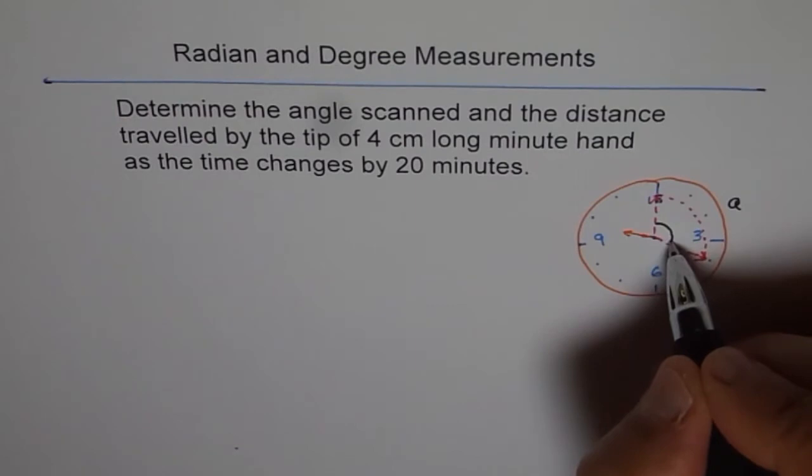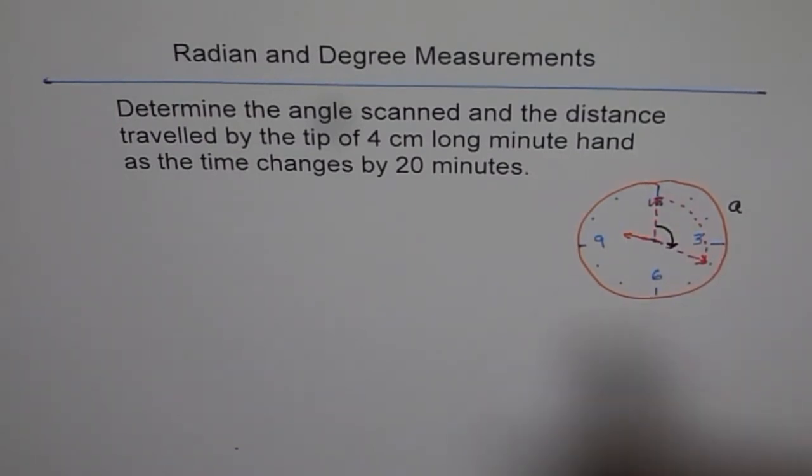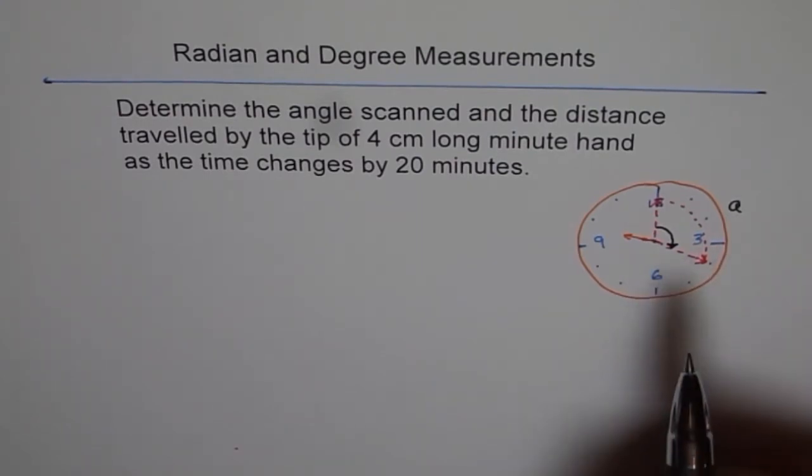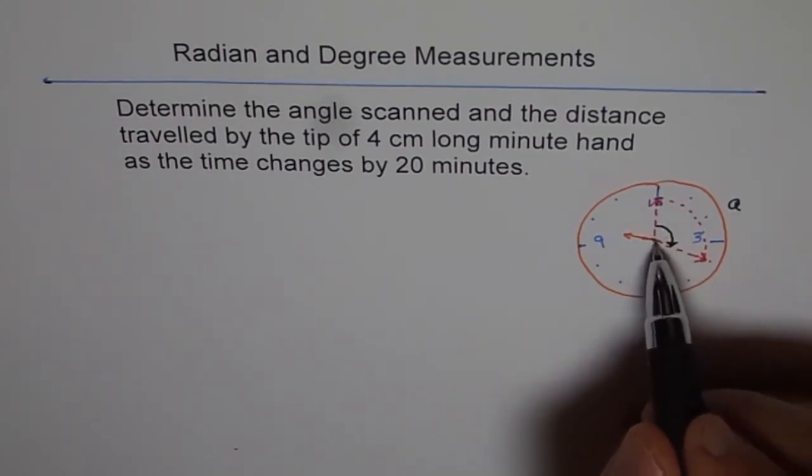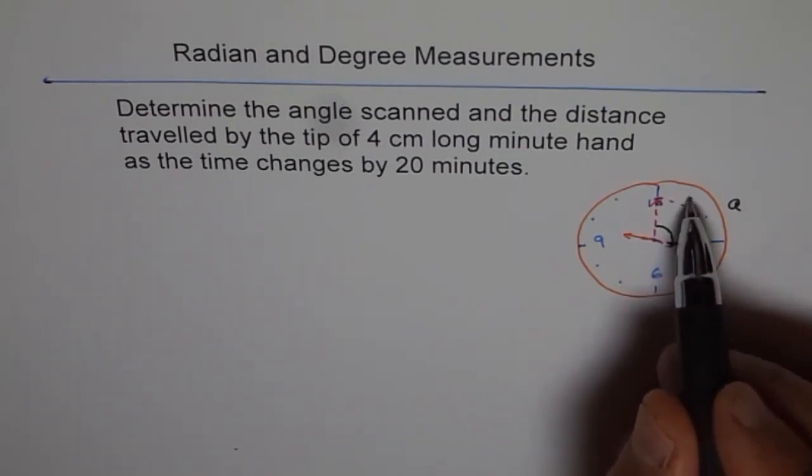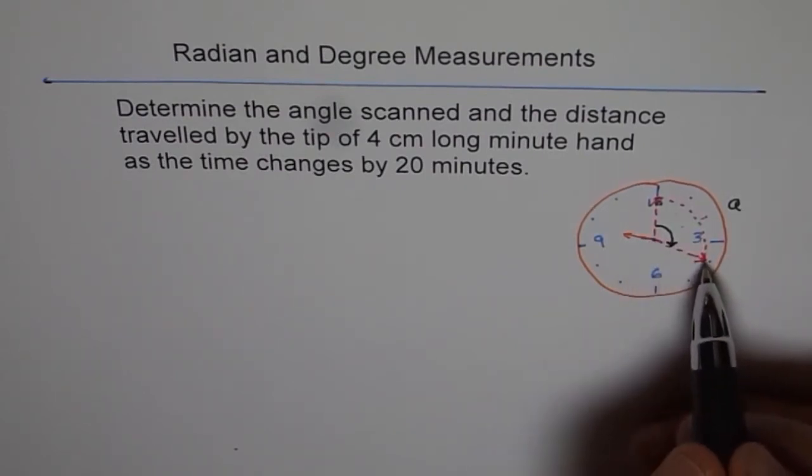So, this is the angle scanned from here to here. Now, you can find it in degrees or in radians. Let me do it in radians first. So, if you do radians, then from here to here, it is pi radians. And this pi is divided by 6. So, pi by 6 is each minute. Do you see that? Pi by 6 is each minute.